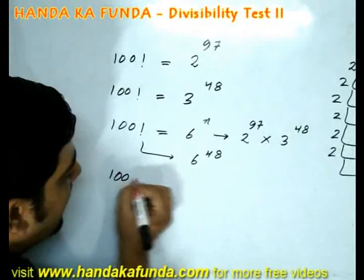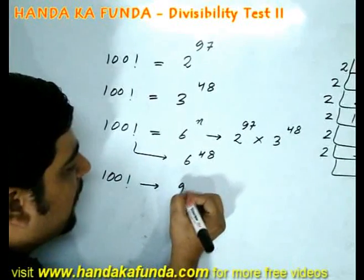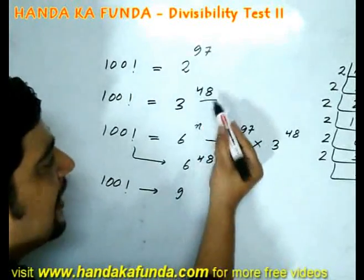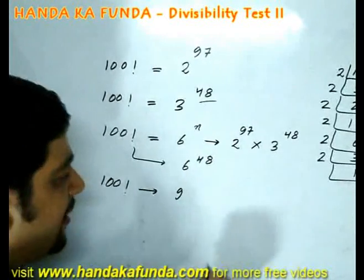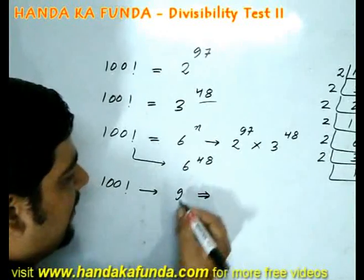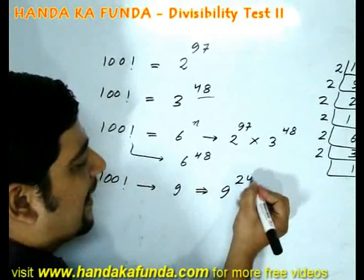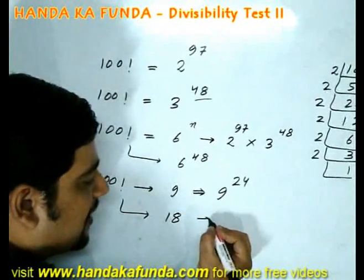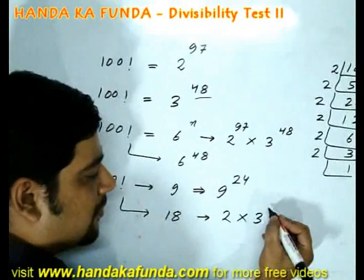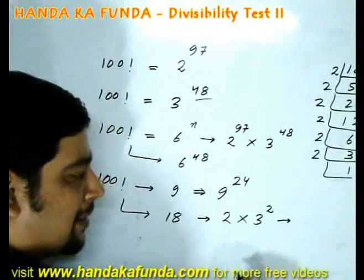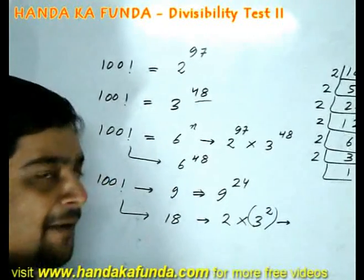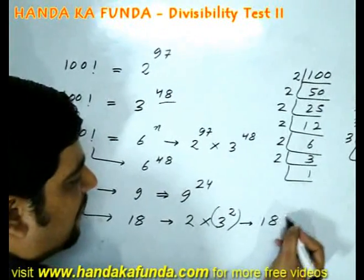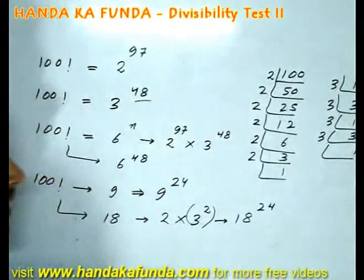What will be the power of 9 in 100 factorial? We have 48 threes, so the number of 9's (which is 3 squared) will be 48 divided by 2, which equals 24. How about the power of 18? Since 18 equals 2 times 3 squared, we look at the power of 3 squared, which is again 24. So the power of 18 is also 24.